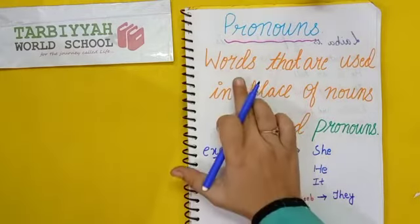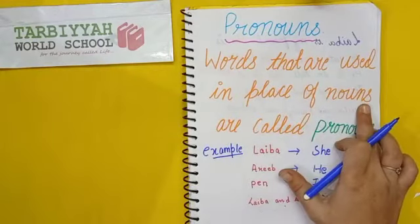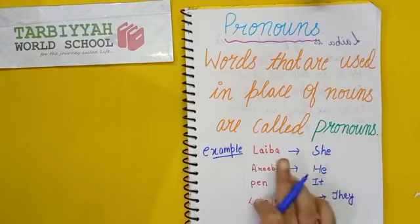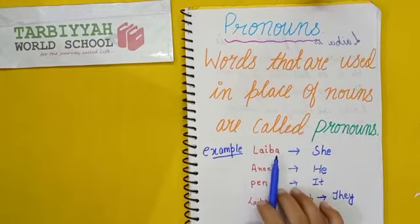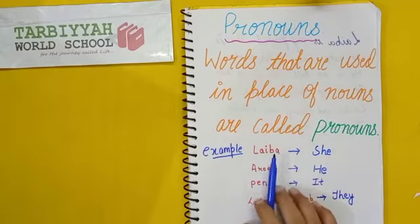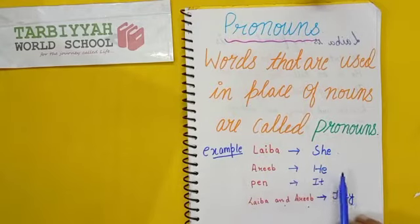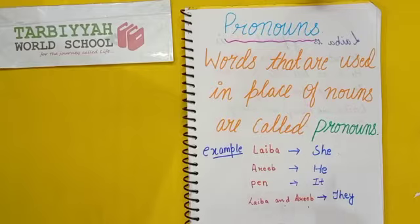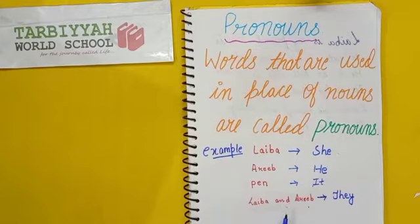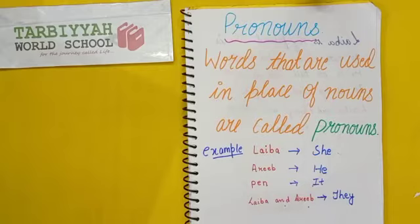Words that are used in place of nouns are called pronouns. Laiba is a noun because it is a name of a girl, so if we use the name of a girl, we always use 'she.' For a boy, we use 'he.' For things or animals, we use 'it.' And 'they' we use for plural — more than one person.